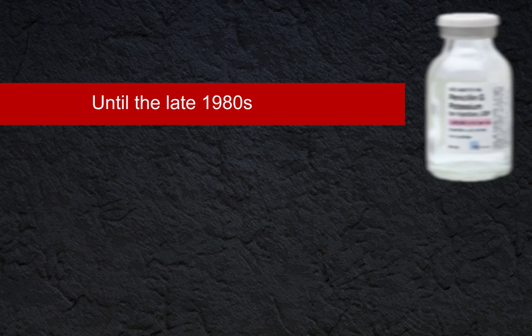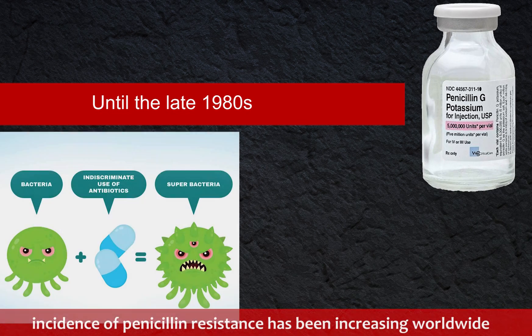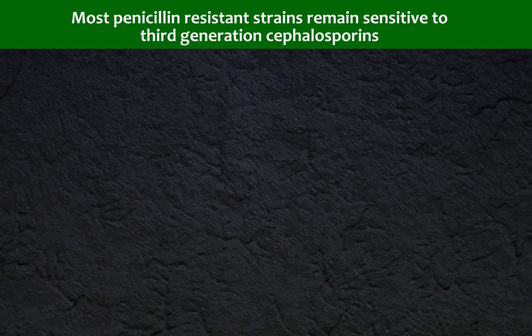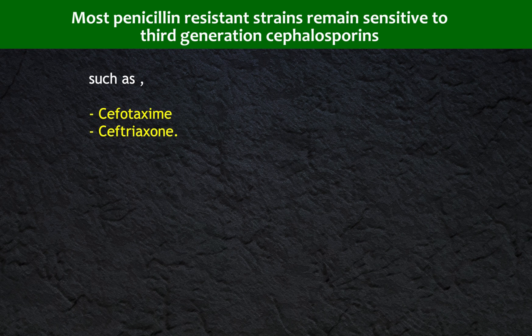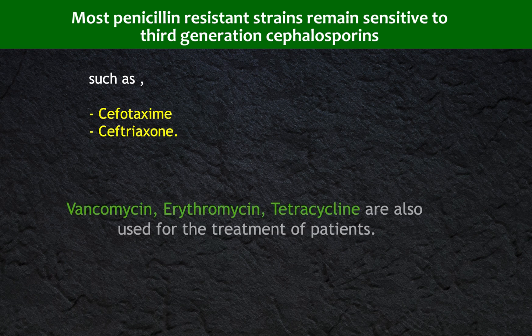Treatment: Until the late 1980s, the drug of choice was penicillin G. The incidence of penicillin resistance has been increasing worldwide. Most penicillin-resistant strains remain sensitive to third-generation cephalosporins such as cefotaxime and ceftriaxone. Vancomycin, erythromycin, and tetracycline are also used for treatment.